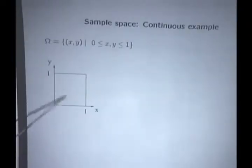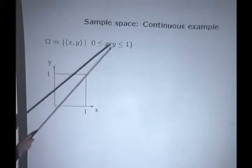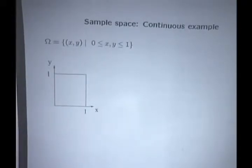All the possible points inside the square are possible outcomes of the experiment. A typical outcome of the experiment is going to be a pair of numbers (x, y), where x and y are real numbers between zero and one.